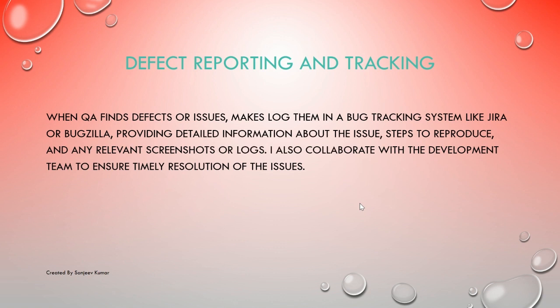For defect reporting and tracking — when a QA finds defects or issues, they must log them in a bug tracking system like Jira or Bugzilla, providing detailed information about the issue and steps to reproduce, along with any relevant screenshots or logs. Collaborate with the development team to ensure timely resolution. Whenever you find any issue, mention the steps clearly — if you have a mobile device, record a video and provide it to the developer so they don't need to reach out for clarification. Put all this into the particular bug tracker tool.